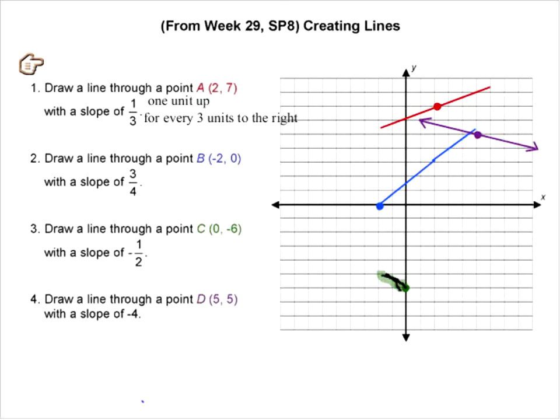So for example, if I'm working on number one, Joe, if you can help me do this, right next to the one, I can write the word up. Because the slope of one third means that we're going to go one unit up for every three units to the right. So I'm going to write one unit up and then three units to the right. And that kind of helps the students remember what they're supposed to do. Does that make sense?